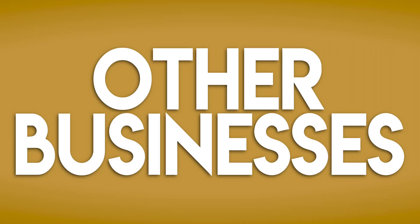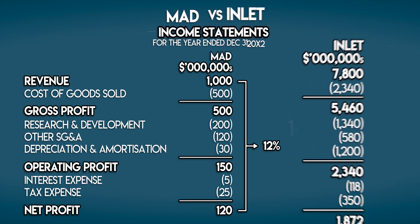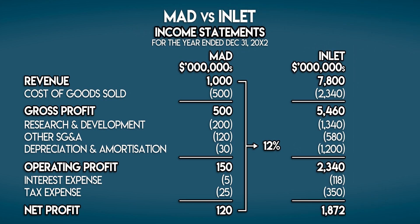But how did they fare against similar businesses? Here are the current year income statements for MAD and Inlet, a direct competitor in the same industry. Straight away, we can see that Inlet earned much more revenue — $7.8 billion — and also managed $1.872 billion in net profit. Their net profit margin is $1.872 billion divided by $7.8 billion, which equals 0.24 or 24% — significantly more than MAD's 12%. So Inlet is earning more revenue and converting a higher proportion of that revenue into net profit.